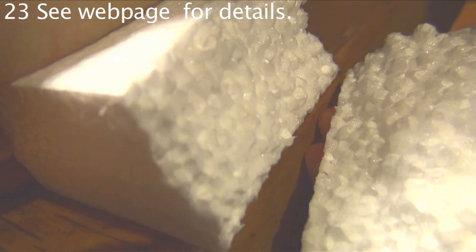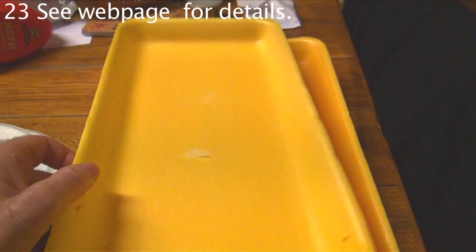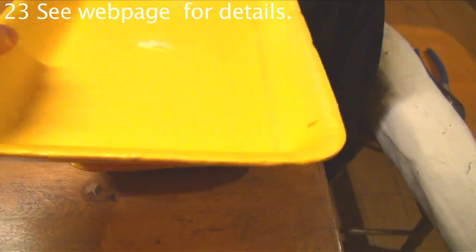People do make gliders out of disposable foam plates, egg cartons, meat and produce trays, but that foam is dense even when sliced thin.